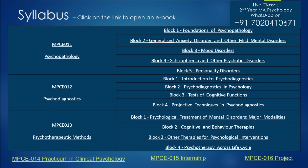Besides DSM, we also have the ICD — International Classification of Diseases — which also references psychological disorders, but that content is quite less compared to DSM. DSM is given by the APA, the American Psychological Association, and is the preferred manual for identifying psychological disorders. All of this we will study under MPCE 011.